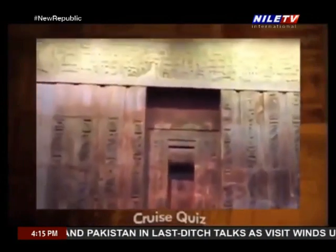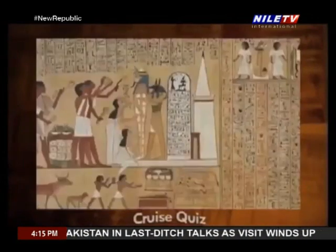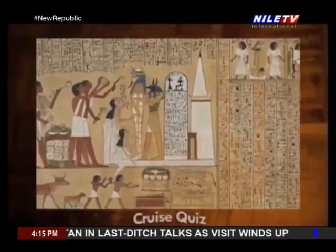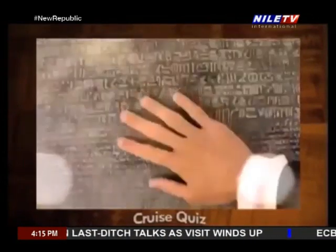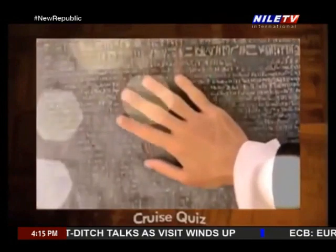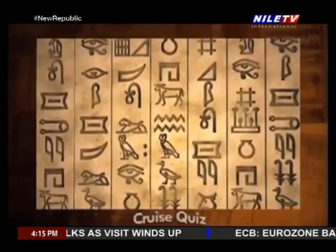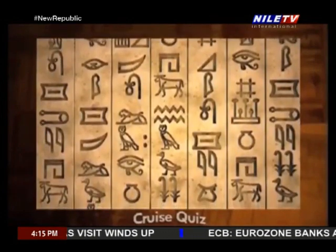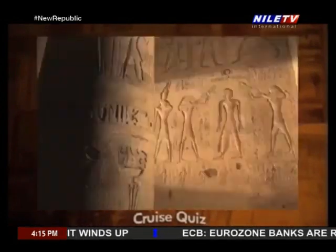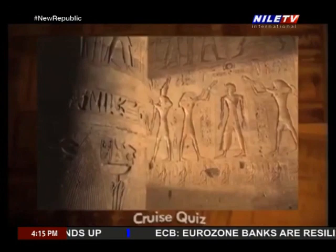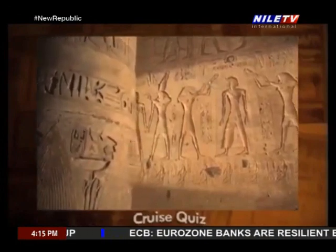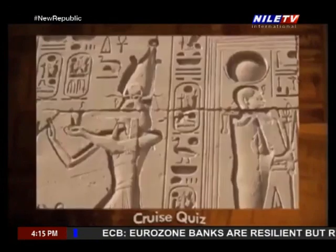The hieroglyphic language was the former language of the ancient Egyptians. It is in the form of pictogram letters that was used by the ancient Egyptians as drawings on the walls of temples and cemeteries.